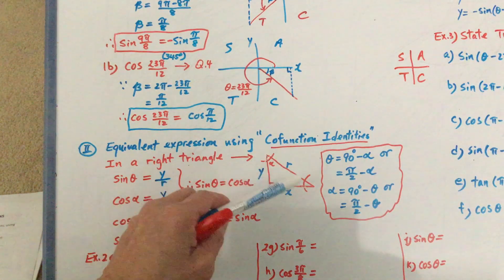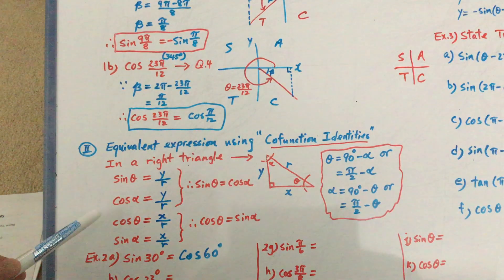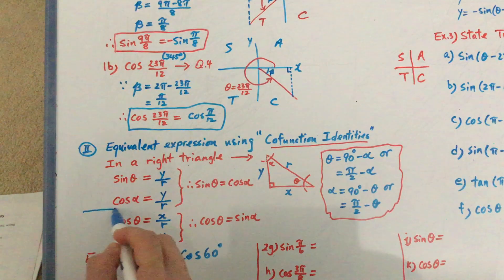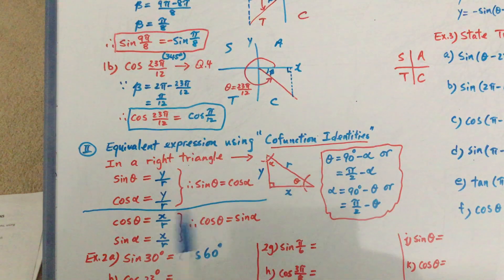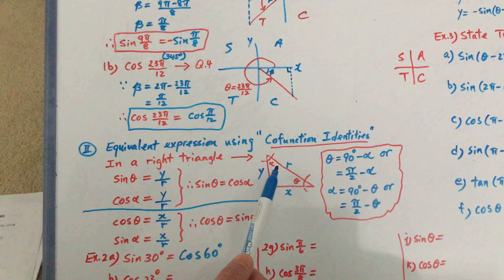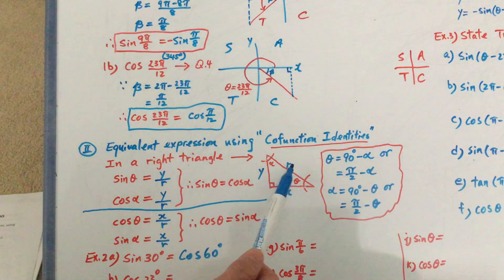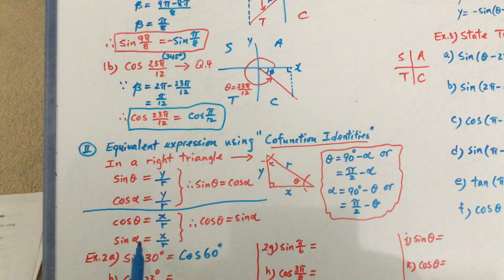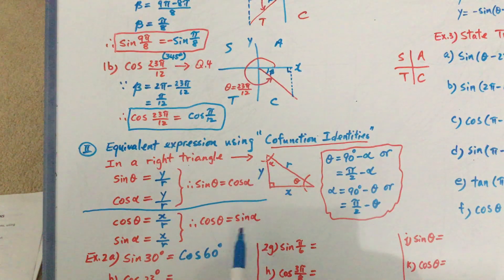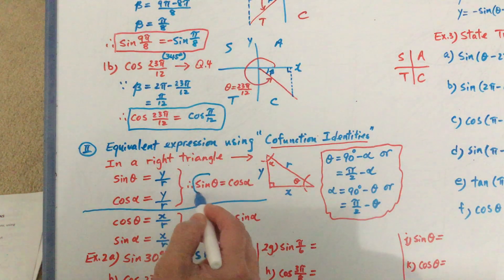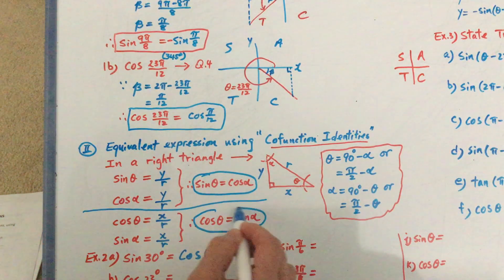Let's try one more example. If I'm taking the cosine of angle theta, cosine theta is equal to x over r — adjacent over the hypotenuse. If I need to use angle alpha in order to get x over r, I need to take the sine of angle alpha, because sine alpha is the opposite x over r. So again, the cosine of this angle is the same as the sine of the other angle. This is what we call the co-function identities.